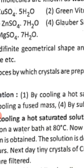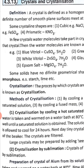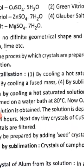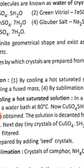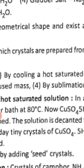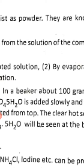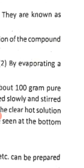We will discuss one or two methods. First: crystallization by cooling a hot saturated solution. In this process, about 100 grams of pure water is taken in a beaker and warmed on a water bath at 80°C. Now copper sulphate (CuSO₄) is added slowly and stirred well until a saturated solution is obtained.